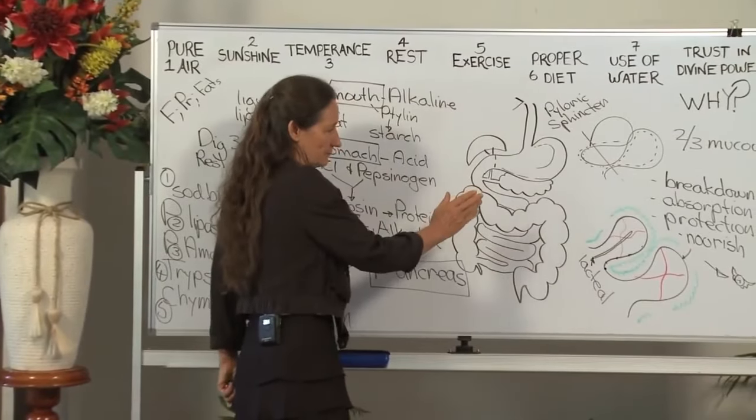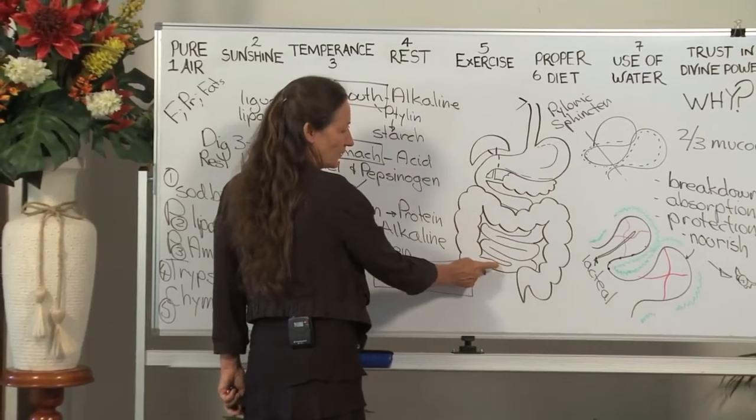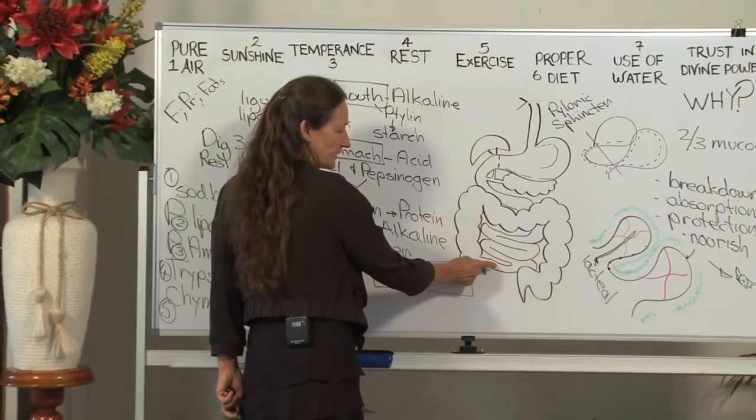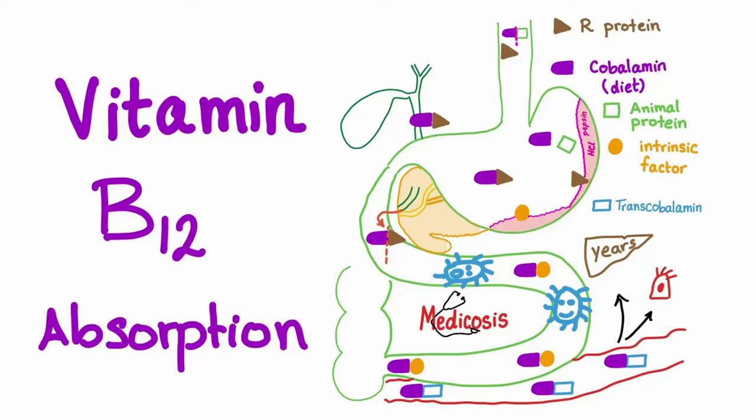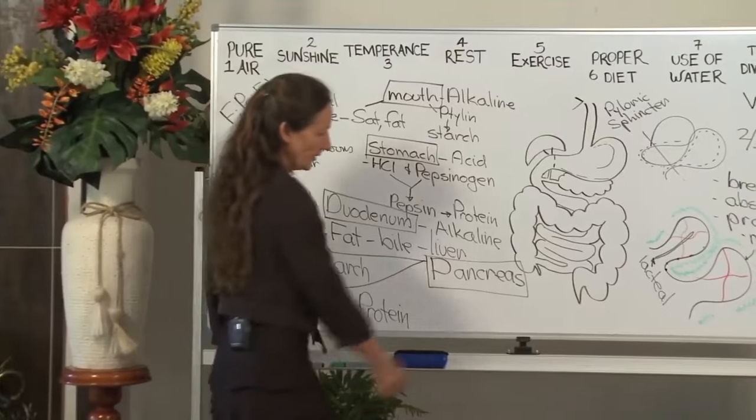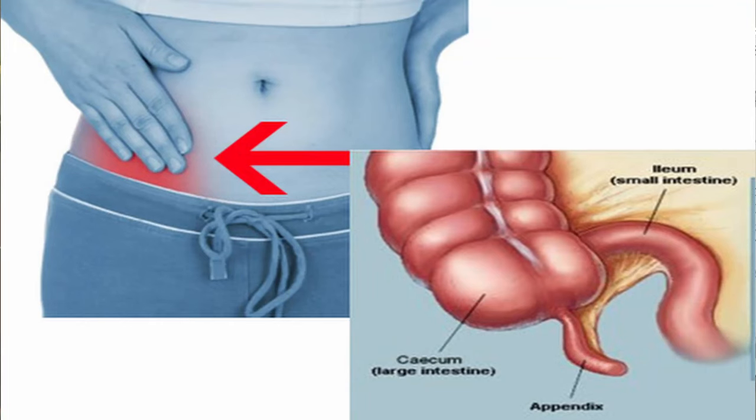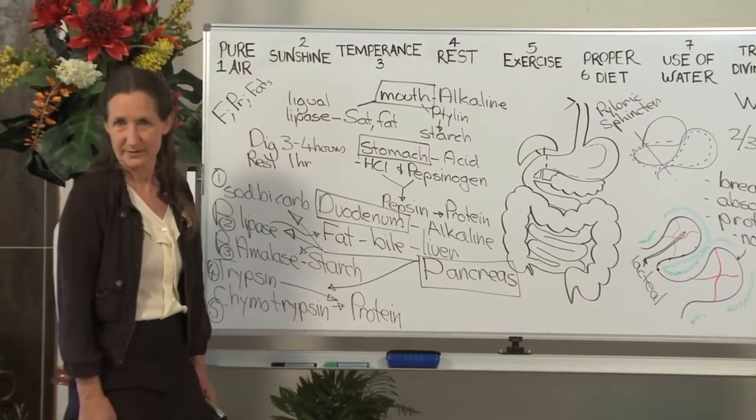The majority, really all of absorption should have happened by the time we get to the ileum. That's the last part of the small intestine. And it is in the ileum that B12 is absorbed. Notice this little fellow here. That's your appendix. Does it have a use? It has a very important use.